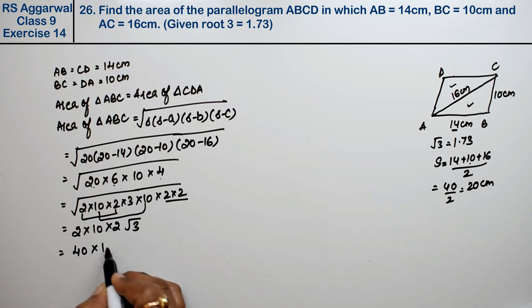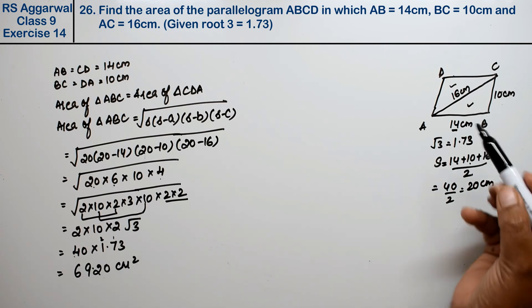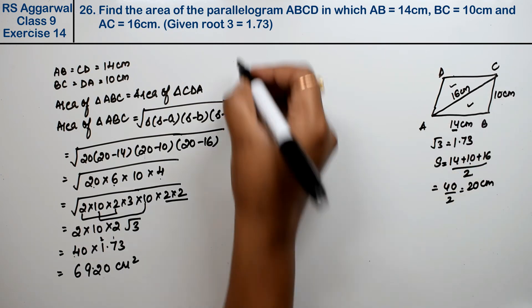And root 3's value is given as 1.73. So we multiply 40 by 1.73. 4 times 3 is 12 carry 1, 28, 29, carry 2. 4, 1 is 5, 6. We put the decimal point after two digits. This gives us the area of triangle ABC as 69.20 cm squared.